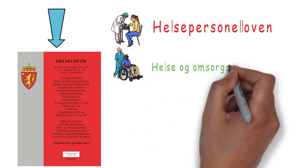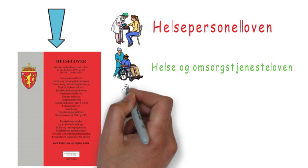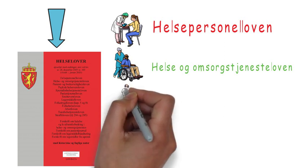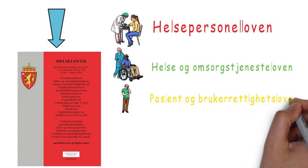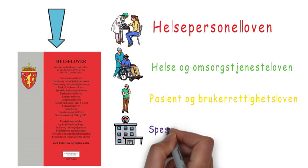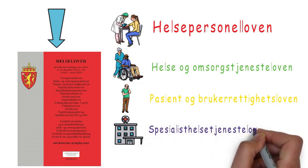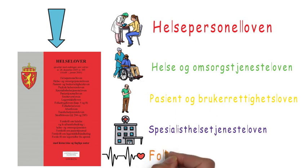Additional key topics include health and care services, patient and user's rights, special health services, laws regarding health security and insurance of people, and dental health services. In these chapters you will study which responsibilities you have and what kind of actions you can take in a number of different situations.